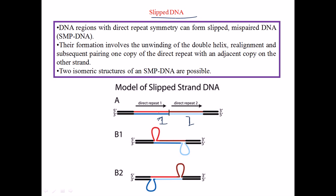Now, since we have direct repeats, for example, if we have stretches of adenine, on the opposite side we will have stretches of thymine. What happens if some part of this adenine strand bulges out and is cut like that? The opposite strand is still able to make bonds with the rest of the chain because there are lots of the same type of nucleotide bases present.